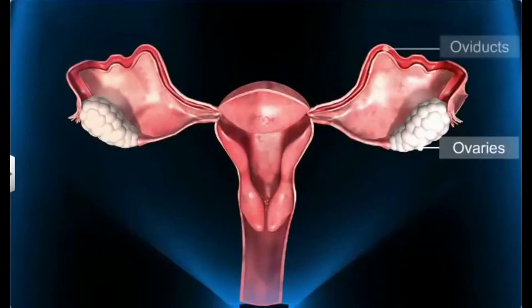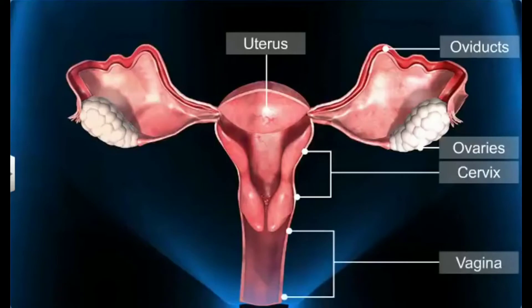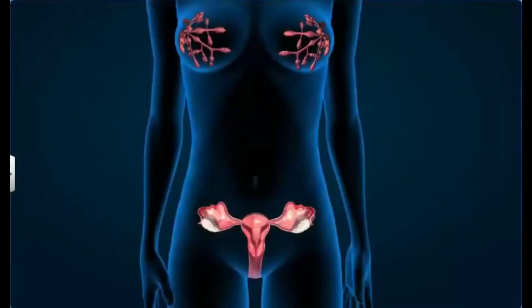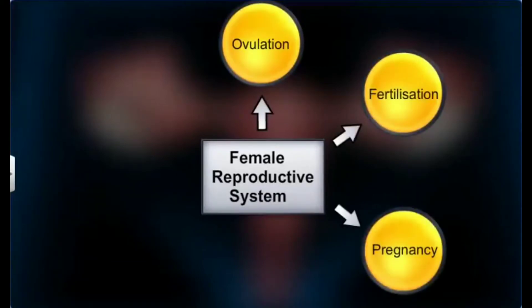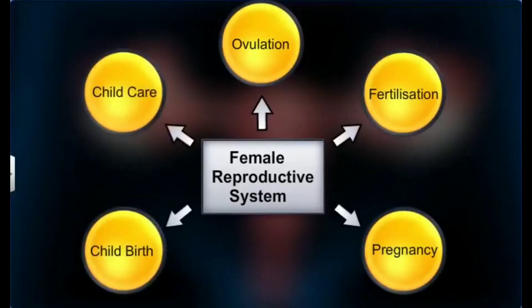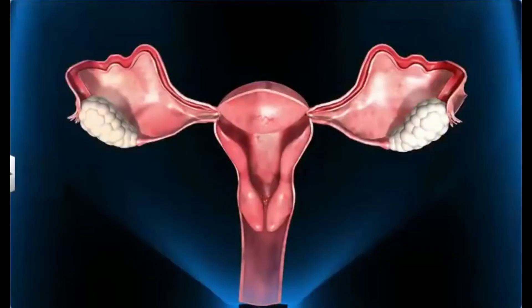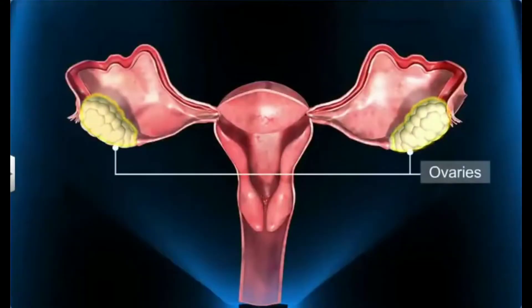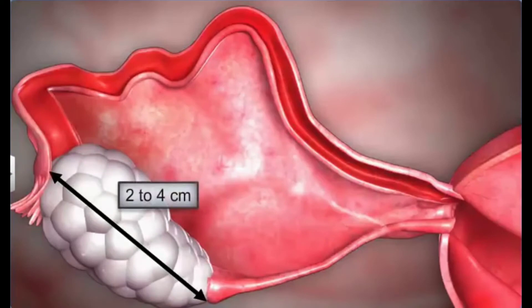Now we'll study the female reproductive system. The female reproductive system includes the ovaries, oviducts, uterus, cervix, vagina, and the external genitalia located in the pelvic region, along with a pair of mammary glands. It supports the processes of ovulation, fertilization, pregnancy, childbirth, and child care. The female reproductive system includes a pair of ovaries located one on each side of the lower abdomen. They are the primary sex organs as they produce the ovum, or the female gamete. Each ovary is about 2 to 4 centimeters in length.